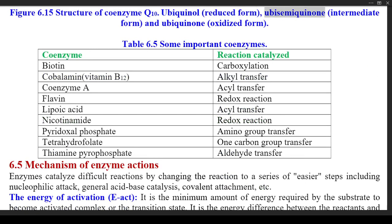The three forms of coenzyme Q are: ubiquinol (reduced form), ubisemiquinone (intermediate form), and ubiquinone (oxidized form). Table 6.5 lists some important coenzymes and their reactions: biotin (carboxylation), cobalamin/vitamin B12 (alkyl transfer), coenzyme A (acyl transfer), flavin (redox reaction), lipoic acid (acyl transfer), nicotinamide (redox reaction), pyridoxal phosphate (amino group transfer), tetrahydrofolate (one-carbon group transfer), thiamine pyrophosphate (aldehyde transfer). Section 6.5: Mechanism of Enzyme Actions.